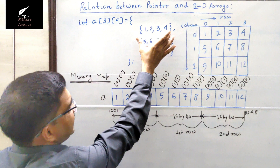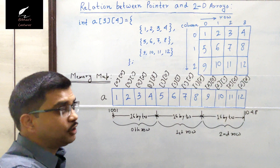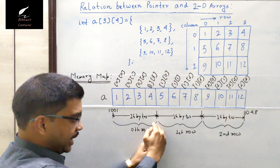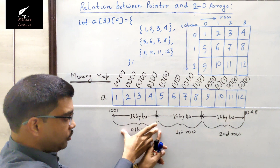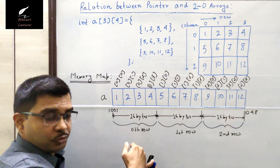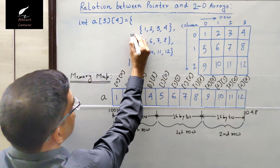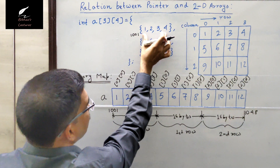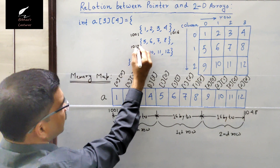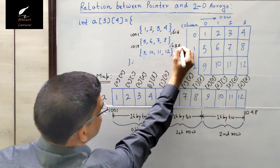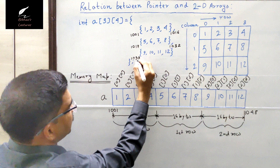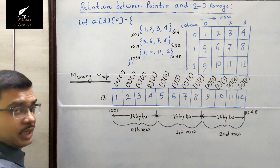Each individual 1D array contains 4 integers, so each 1D array occupies 16 bytes of memory. The 0th row starts at 1001 and ends at 1016. The first row starts at 1017 and ends at 1032 — also 16 bytes. The last 1D array starts at 1033 and ends at 1048.